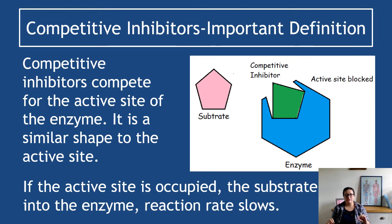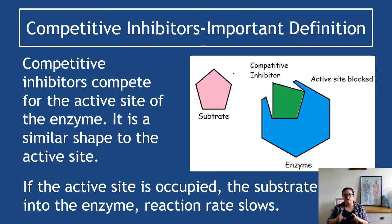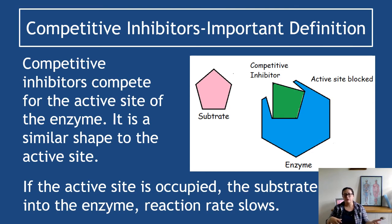Competitive inhibitors compete for the active site of an enzyme. The inhibitor is a similar complementary shape to the active site but it doesn't do the same reaction — it sits in the active site and does nothing. While it's in the active site, the enzyme doesn't carry out its reaction, so enzyme activity decreases. With the active site blocked, the substrate cannot enter and the enzyme cannot carry out its reaction, so reaction rate slows.